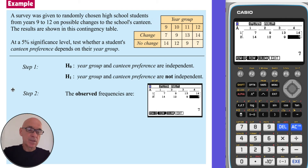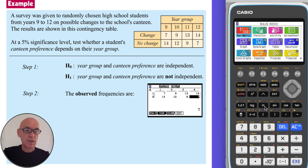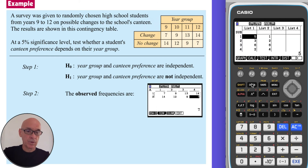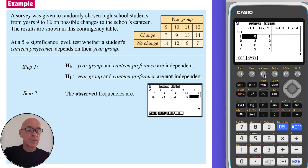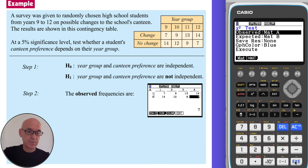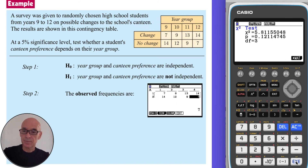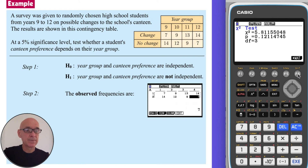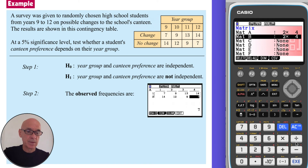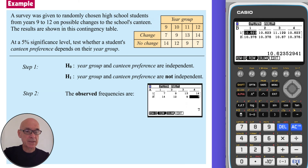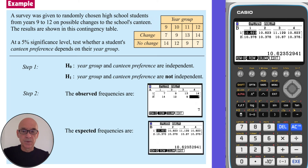In order to see the expected frequencies, we need to perform the chi-squared test. On the calculator, go back to menu, option two for the statistics menu, followed by F3 for a test, followed by F3 for a chi-squared test, followed by F2 for a two-way test. Press execute to get the chi-squared test statistic. To see the expected frequencies, press F6 to get the matrix menu, scroll down to matrix B, select execute, and you'll see the expected frequencies, also shown to the right here.